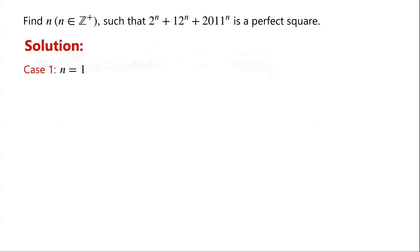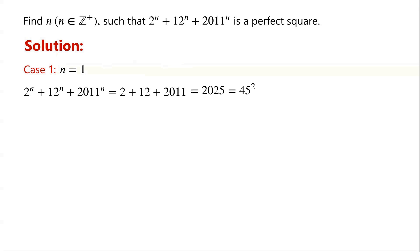Case 1: n equals 1. Then 2^n + 12^n + 2011^n equals 2 + 12 + 2011, which is equal to 2025, which is 45 squared. So n equals 1 is a solution.